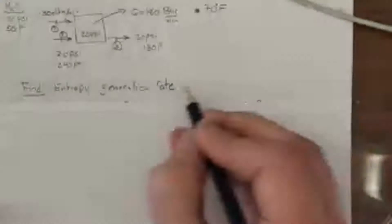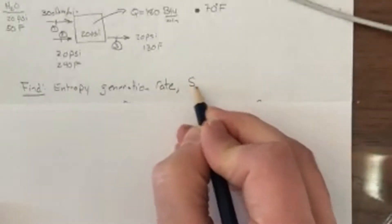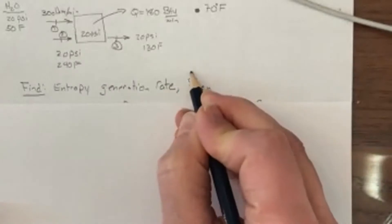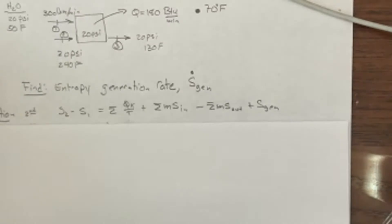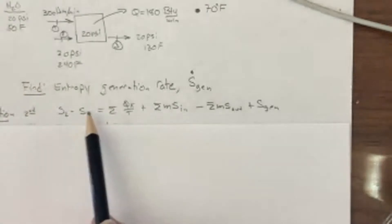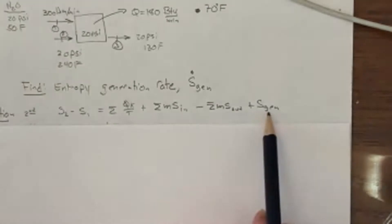So the question might say, what's the entropy generated? So we're looking for the rate here. So that's S gen dot. That's what the question is asking for. This seems pretty straightforward. I could write the second law here or the entropy generation equation.